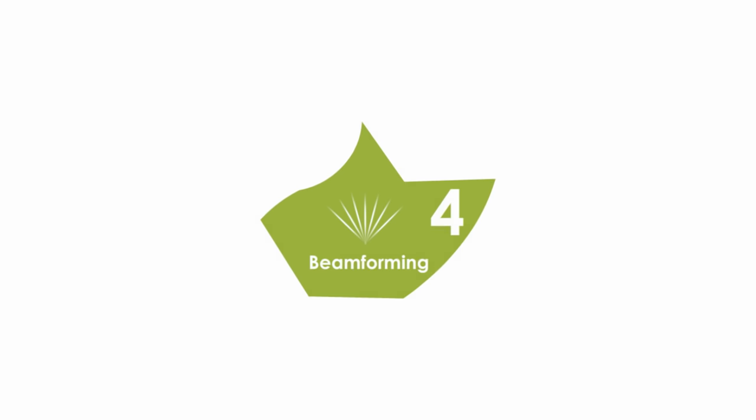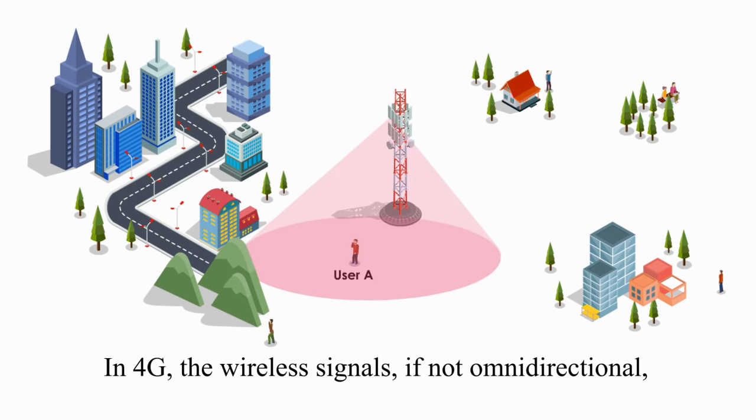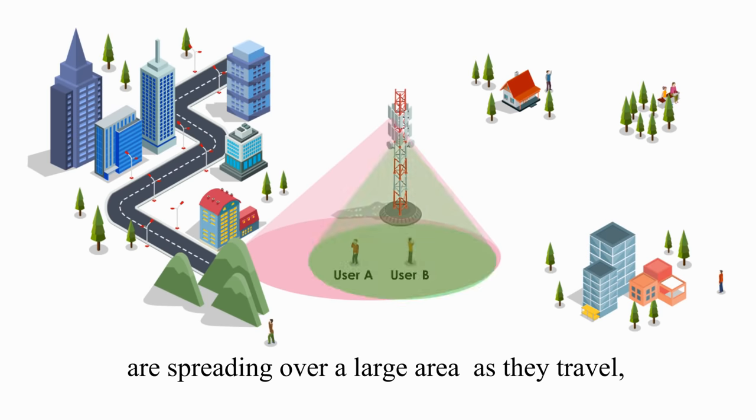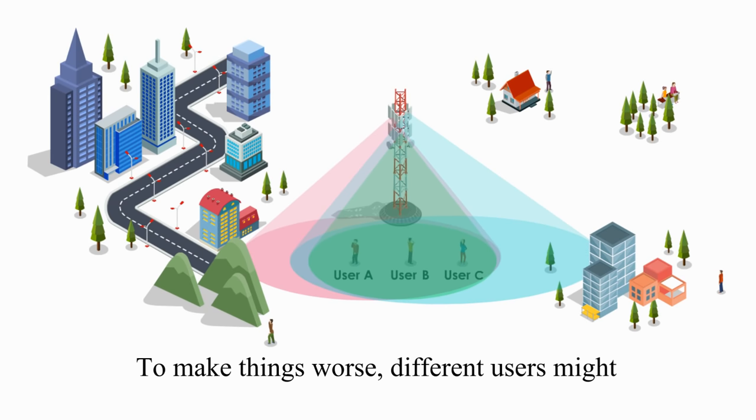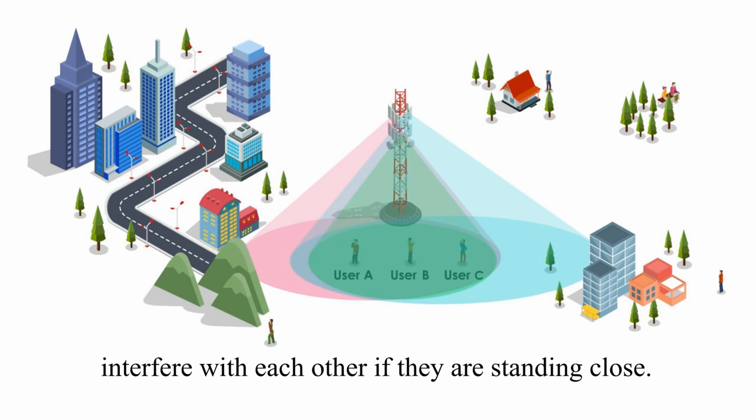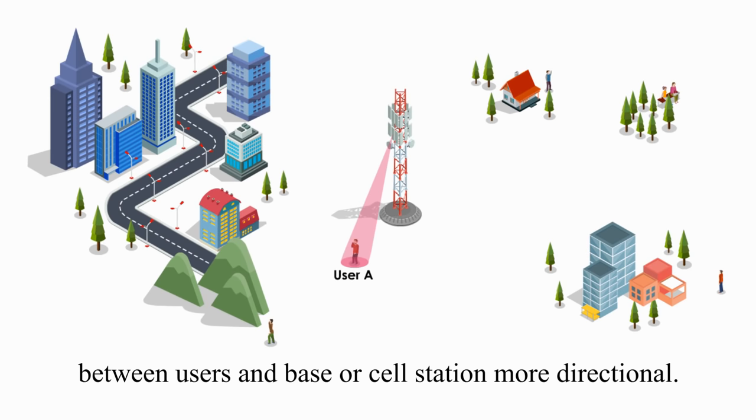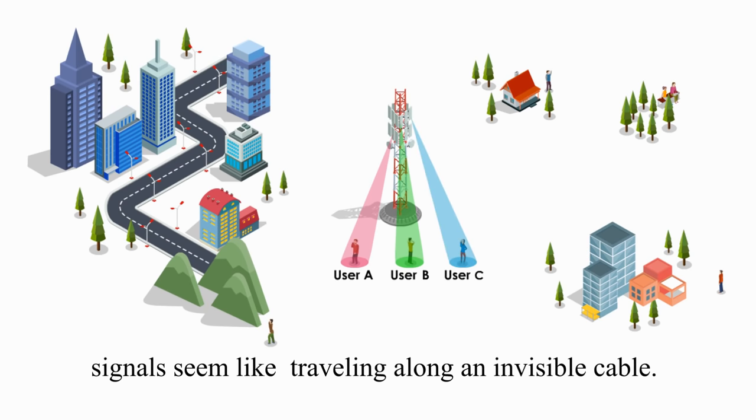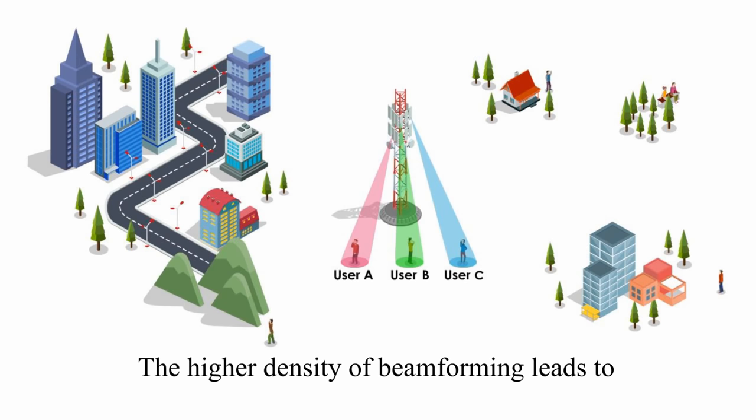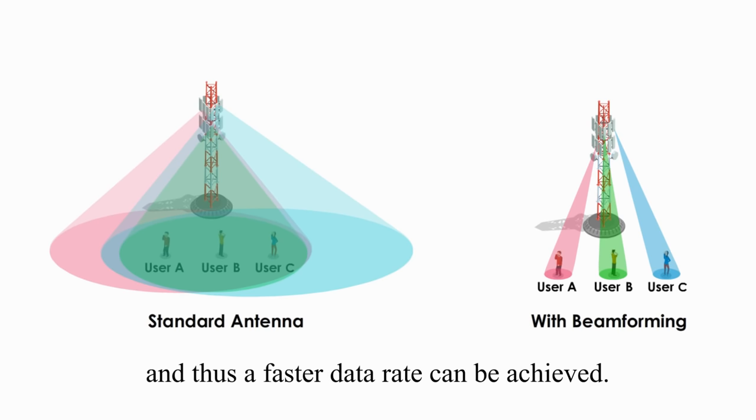The fourth new technology is called beamforming. In 4G, the wireless signals, if not omnidirectional, are spreading over a large area as they travel. Thus, signals tend to lose energy more quickly. To make things worse, different users might interfere with each other if they are standing close. Beamforming makes the transmission between the users and base or cell stations more directional. It can be visualized as a laser beam between them so that signals seem like traveling along an invisible cable. The high density of beamforming leads to less interference and less energy consumption, and thus a faster data rate can be achieved.